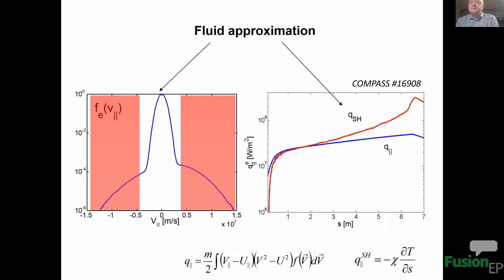As a kind of opening, the first slide shows not my name and affiliation, but a distribution function obtained from kinetic simulations — a typical electron distribution function, nothing special, but obtained by a kinetic model. What is important is that if you now consider the fluid model, the fluid model sees just a small part of this distribution function. Everything outside the red lines is not accessible by the fluid approximation, and the majority of models are exactly fluid-based. The question is how important that hidden part is, and today's talk will demonstrate regions where it is extremely important.